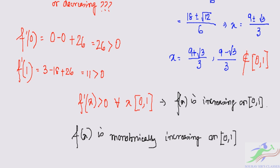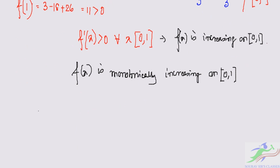On the interval [0,1], since f(x) is increasing, f_max=f(1)=1-9+26-24=-6.